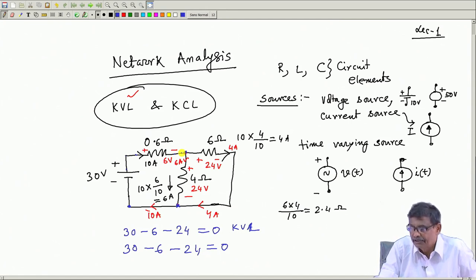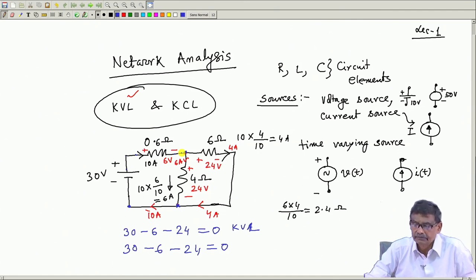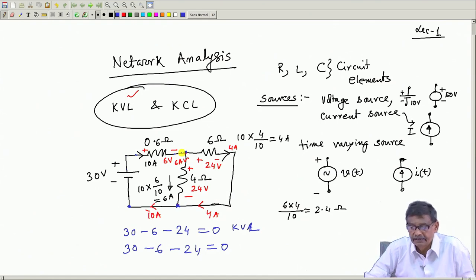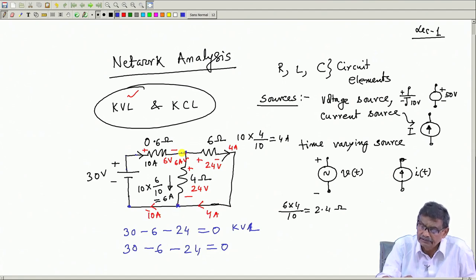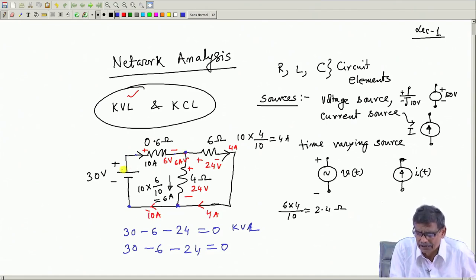With reference to this simple circuit containing only resistance and a fixed DC voltage, I explained KVL and KCL. Another important concept: circuit elements and sources can both be considered circuit elements, but sources are capable of delivering power into the circuit.